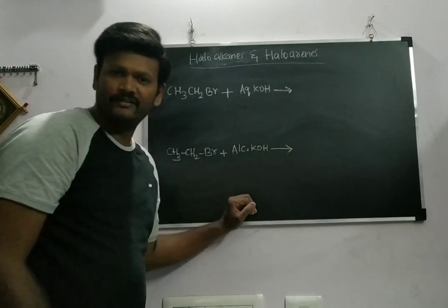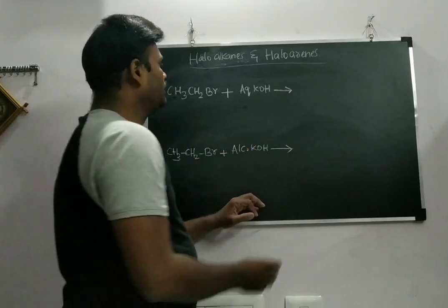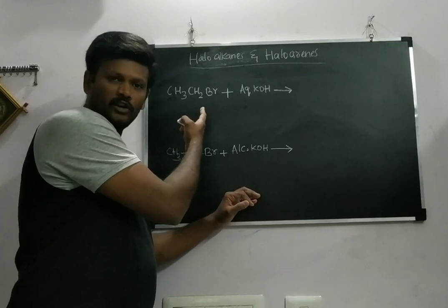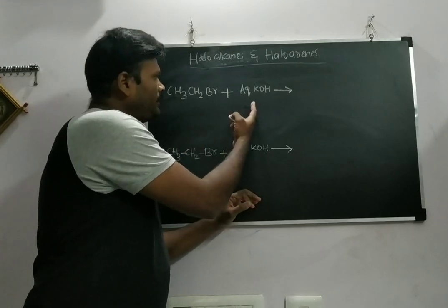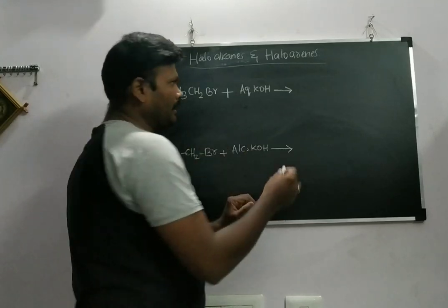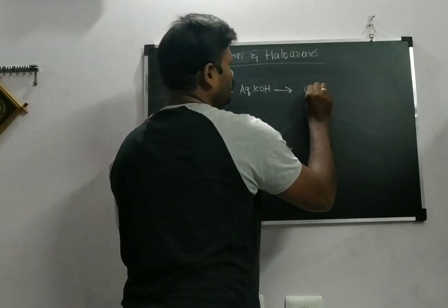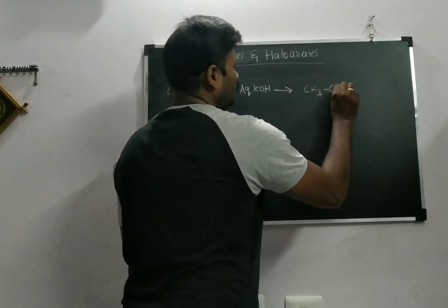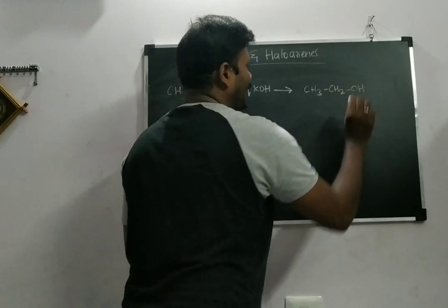Here I'm taking ethyl bromide, which will be reacting with aqueous KOH. What I'm getting is the product CH3-CH2-OH, ethyl alcohol.